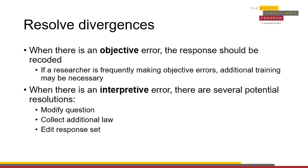When there are interpretive errors in a project, there are several potential resolutions. Questions can be modified when an unclear question is frequently causing interpretive errors. Additional laws can be collected if they clarify an issue that is causing a divergence. And finally, additional responses can be added to avoid similar issues. When a decision has been made about how to interpret a question or responses, it should be recorded in the Research Protocol document. For more information on the Research Protocol, please see Module 7, Publication and Dissemination.